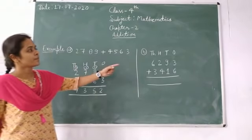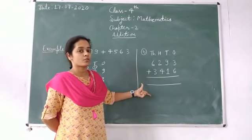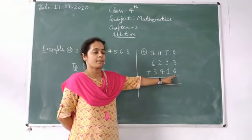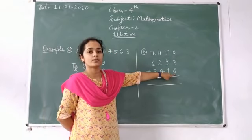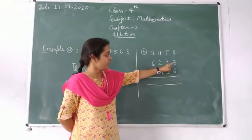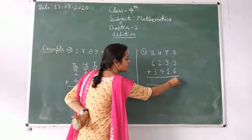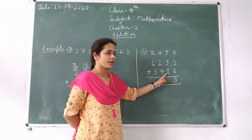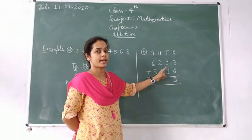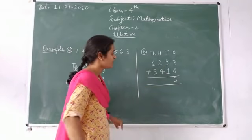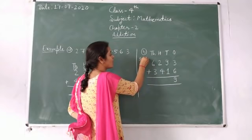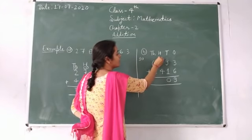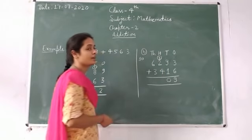Next example — this question is already in column form. Ones place: three plus six — six numbers forward from three — we get nine. Then nine plus one — we get ten. For ten, write zero here and carry one to the tens place.